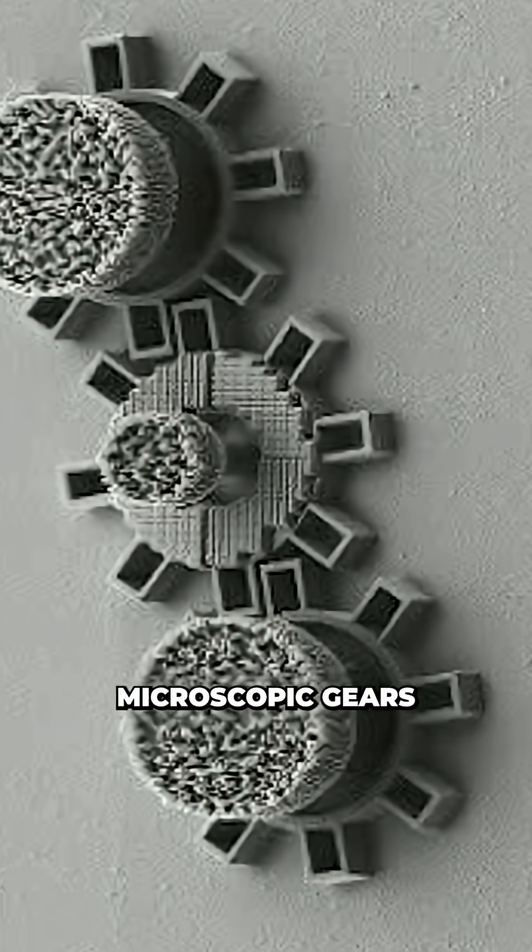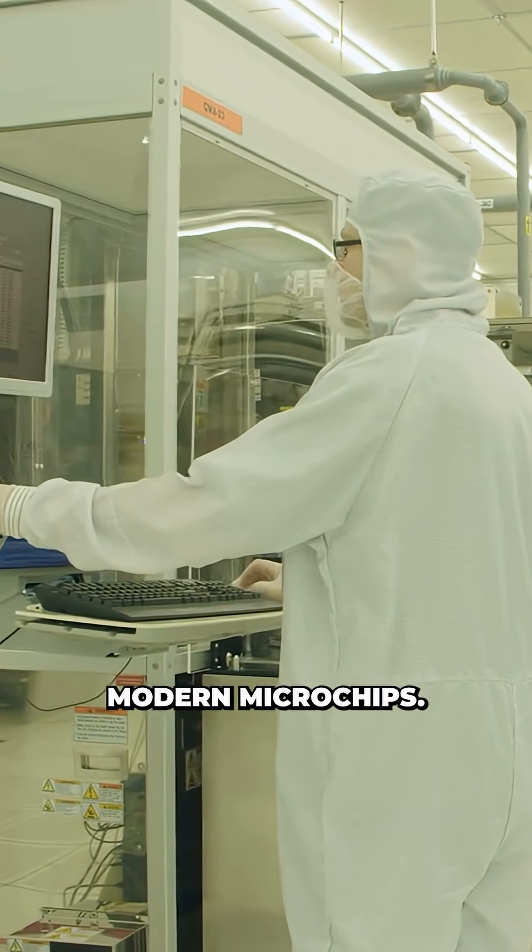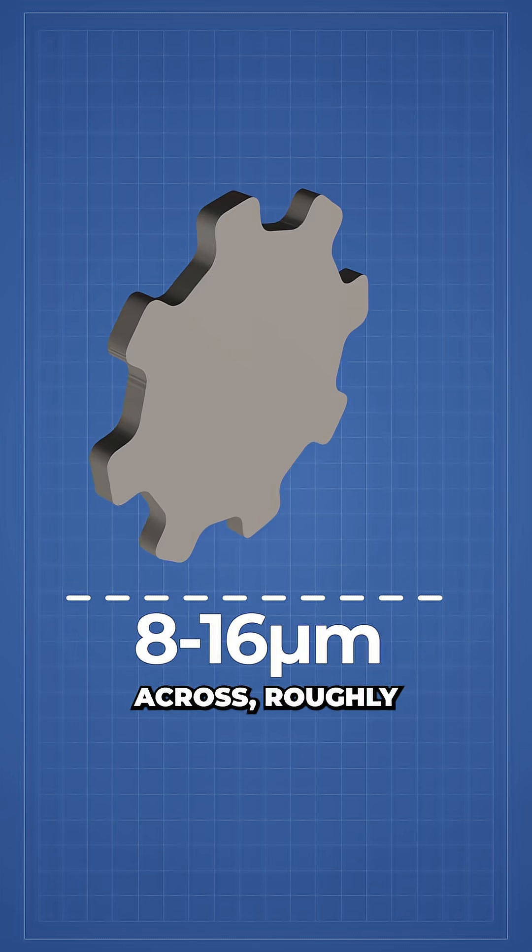To test it, the team fabricated microscopic gears on silicon wafers using the same nanofabrication tools that underpin modern microchips. The smallest gears measured just 8 to 16 microns across, roughly 10 times smaller than a human hair.